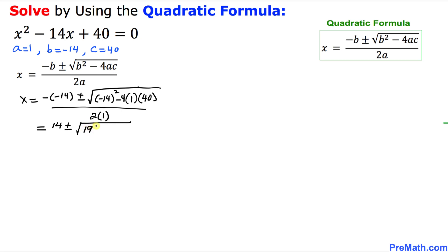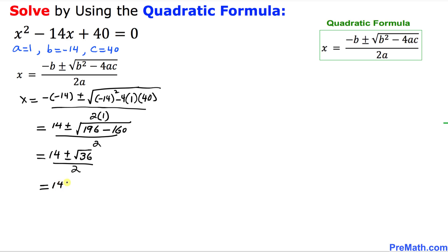That gives us 14 plus or minus the square root of 36, divided by 2. The square root of 36 is 6, so we have 14 plus or minus 6 divided by 2. Now we are going to split these two signs with a positive and negative.